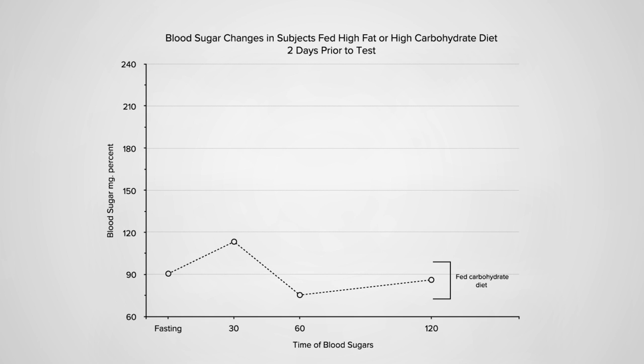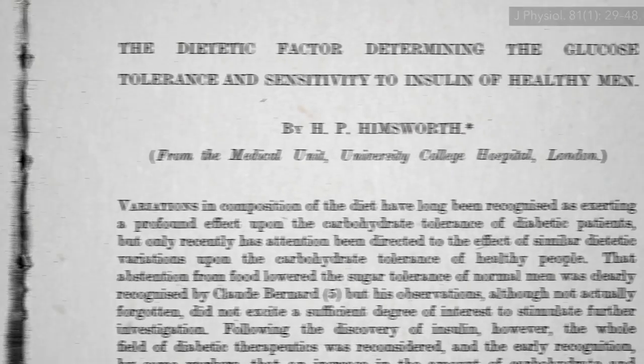Here's the blood sugar response of someone eating sugar after two days eating a high-carb diet. Here's exposure to the same amount of sugar after a high-fat diet for two days. Their intolerance to carbohydrates skyrocketed on a high-fat diet.